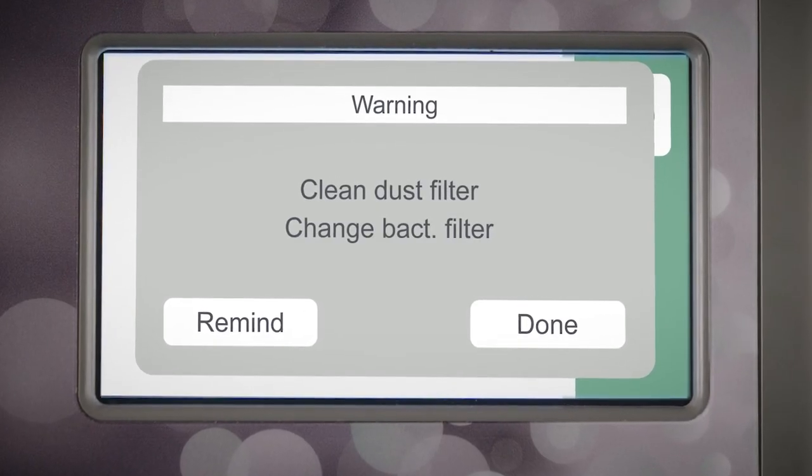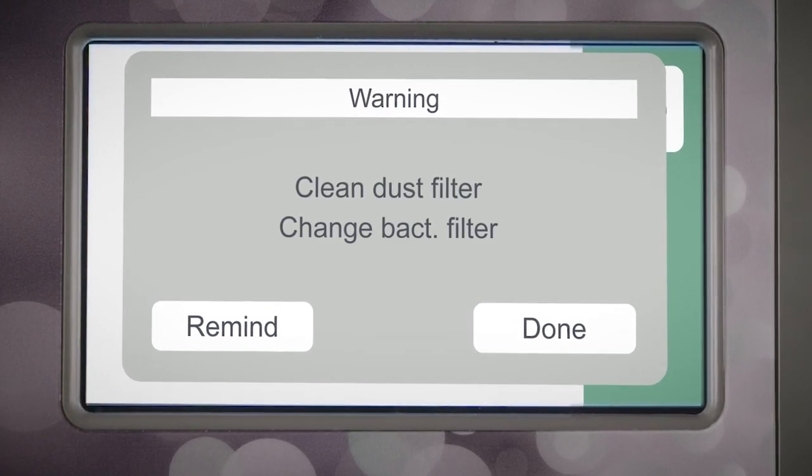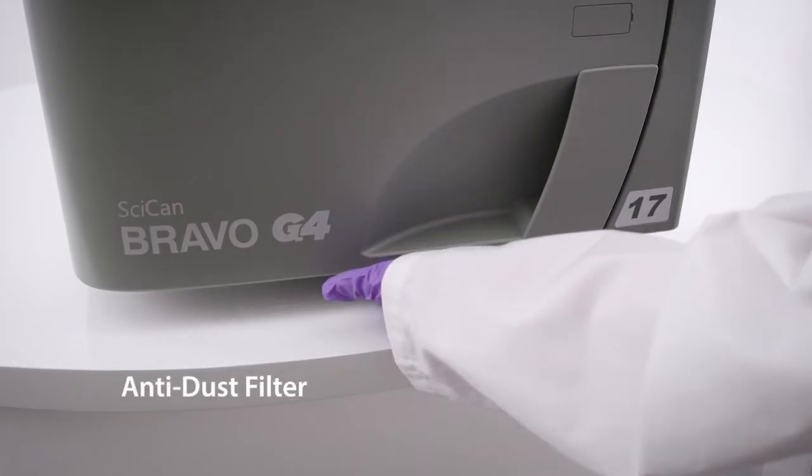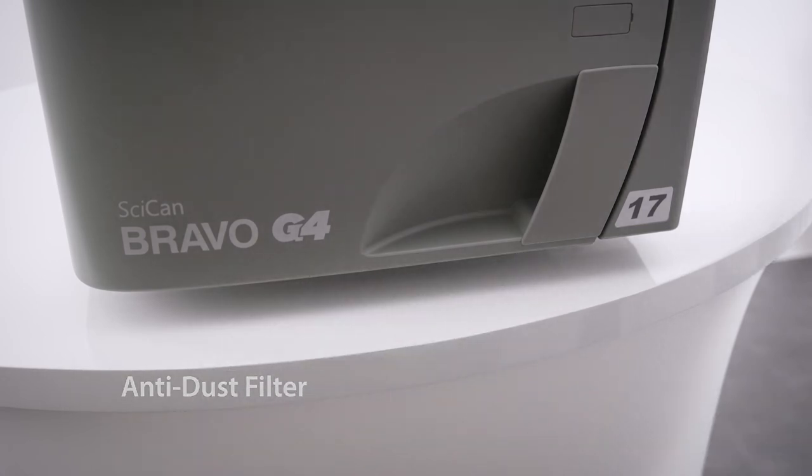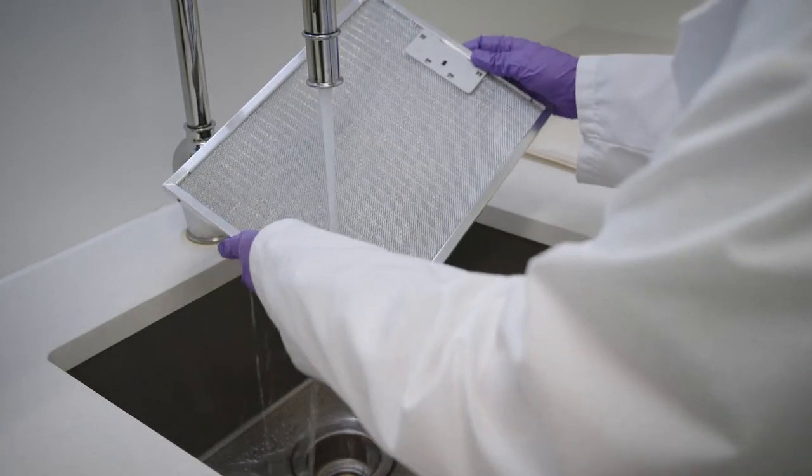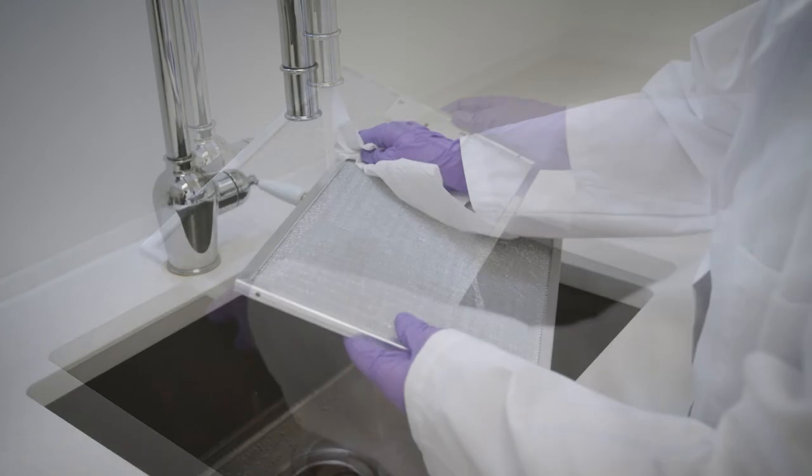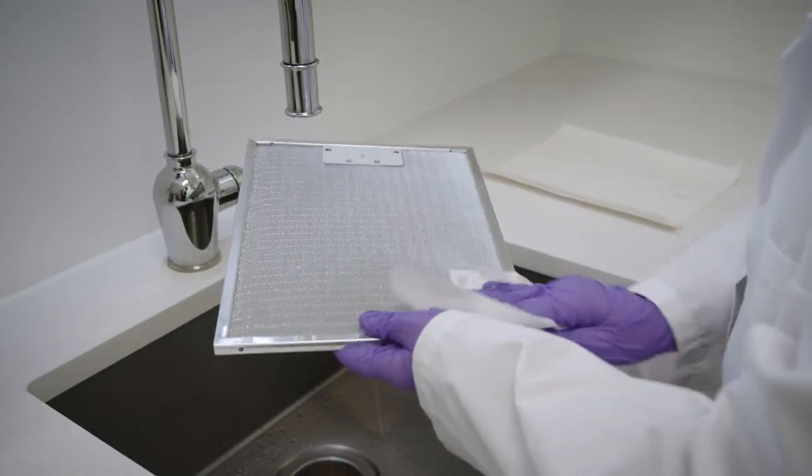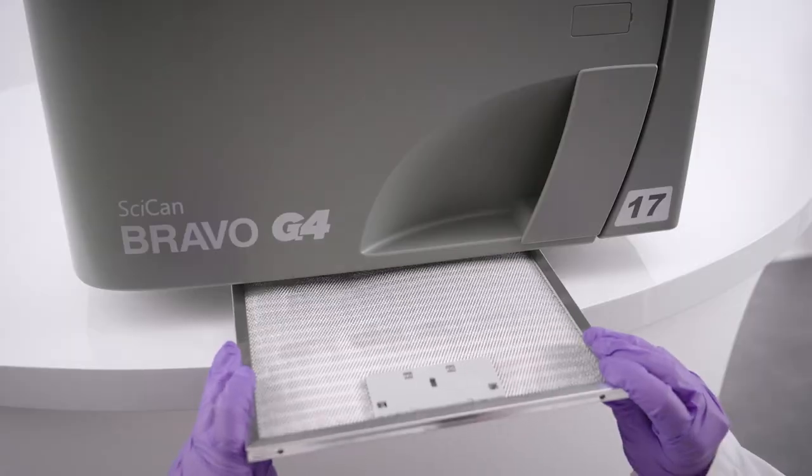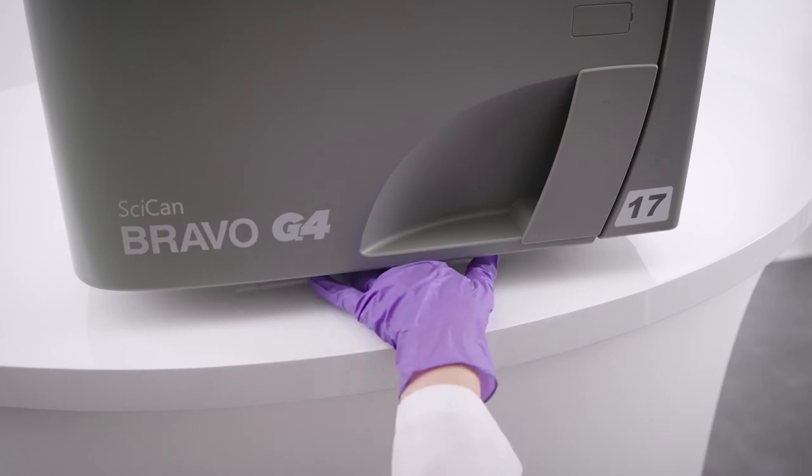The anti-dust filter should be cleaned weekly as well. To clean the anti-dust filter, remove the filter from the lower part of the autoclave, thoroughly rinse with water, and dry it before refitting. The filter can also be cleaned using a jet of compressed air, making sure not to disperse any dust into the environment.